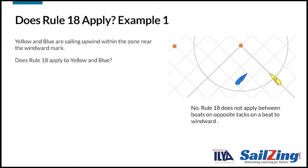The answer is no, Rule 18 does not apply, even though the boats are in the zone. Remember the exceptions in Rule 18.1. The first exception says that the rule doesn't apply between boats on opposite tacks on a beat to windward. Although Rule 18 does not apply at the time shown here, it would begin to apply if either one of the boats tacks.